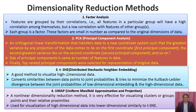t-SNE is a good method to visualize high dimensional data. It converts similarities between data points to joint probabilities and tries to minimize the Kullback-Leibler divergence between the joint probabilities of the low dimensional embedding and the high dimensional data. Kullback-Leibler divergence measures the difference between two probability distributions over the same variable. The next dimensionality reduction method is UMAP, Uniform Manifold Approximation and Projection — a nonlinear dimensionality reduction method. It is very effective for visualizing clusters or groups of data points and their relative proximities, and is used for visualization of high dimensional data into lower dimensions, similar to t-SNE.